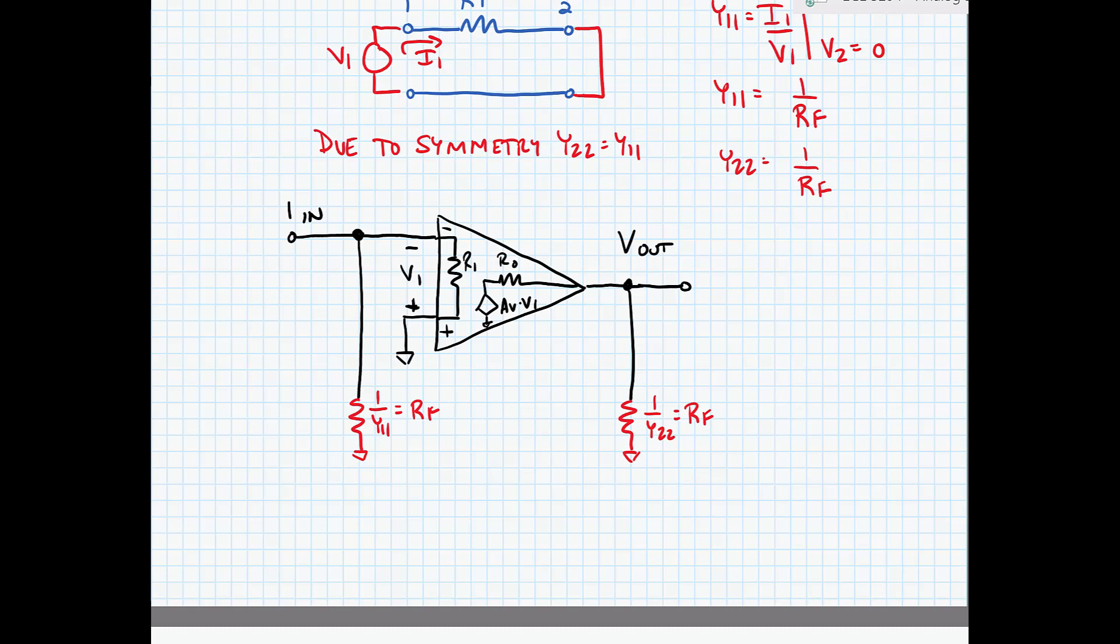So now I'm going to find my gain, Vout over IN. At the input, I have a current division. RF divided by RF plus RN is equal to the current that's going to flow into the input resistance. And I'm going to convert that to a voltage V1 by multiplying it by the input resistance.